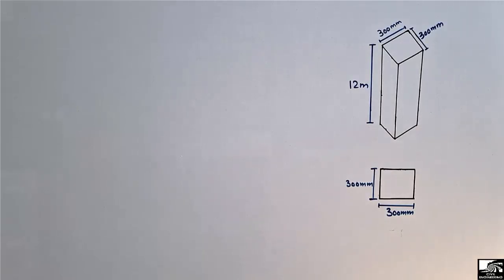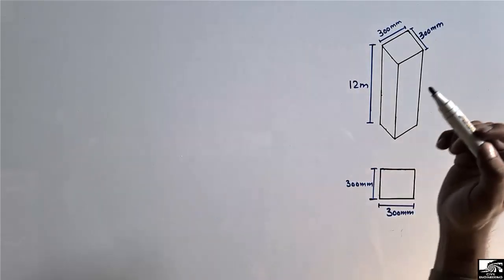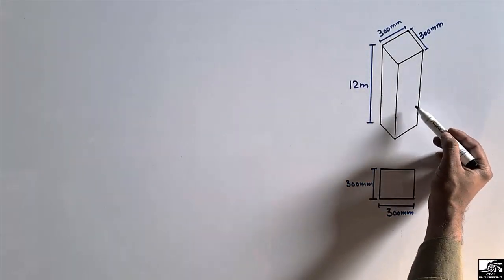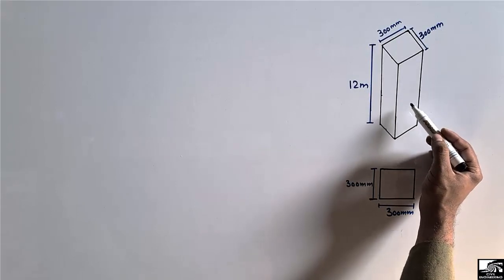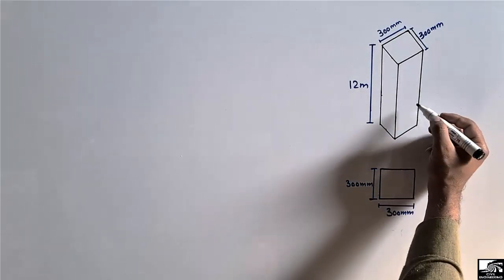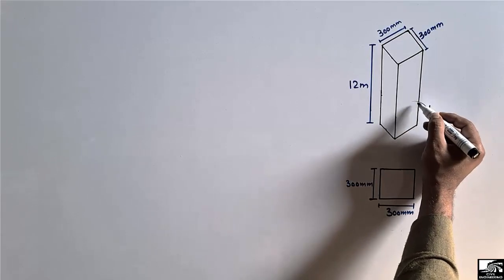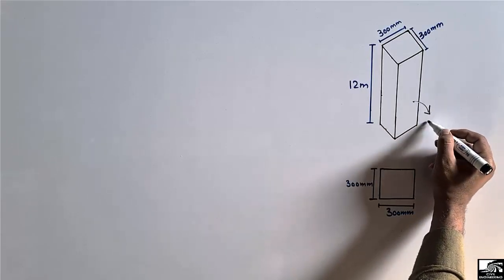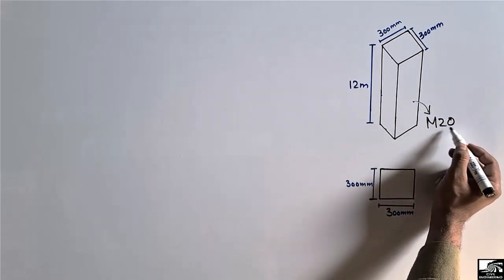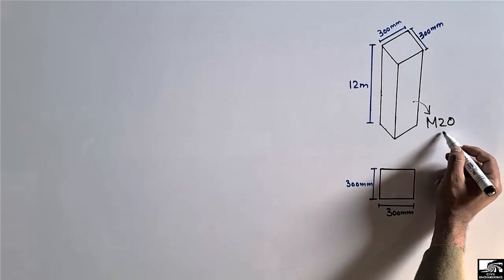Hello guys, welcome back to the Civil Engineering YouTube channel. Please subscribe for daily civil engineering videos. Today we are going to find out the quantities of cement, sand, and aggregate for an RCC column. This RCC column is made up of M20 grade concrete, which has a compressive strength of 20 megapascals.